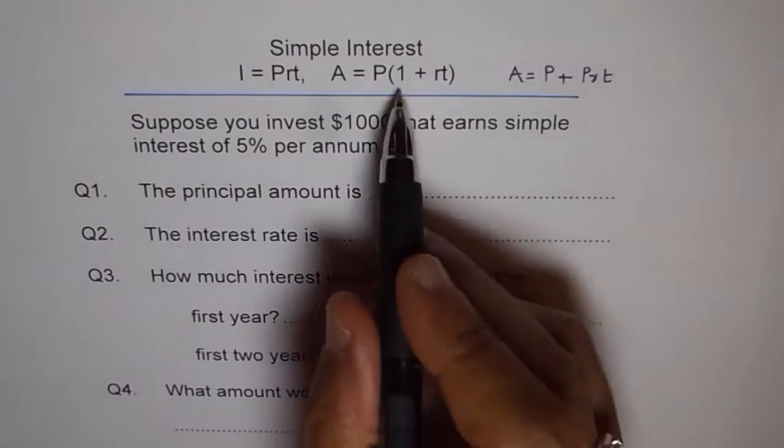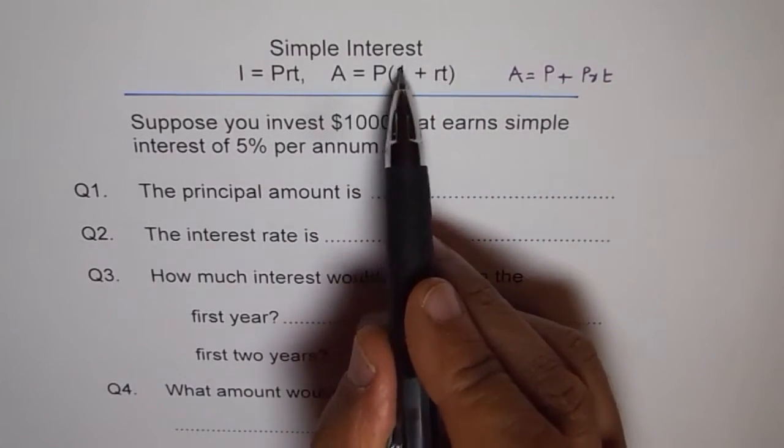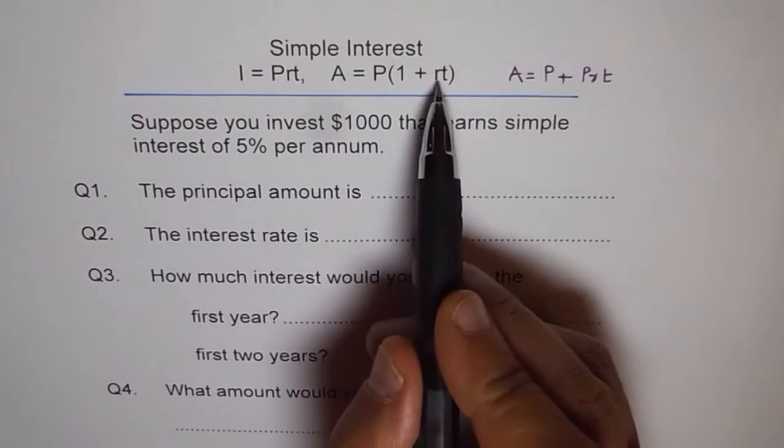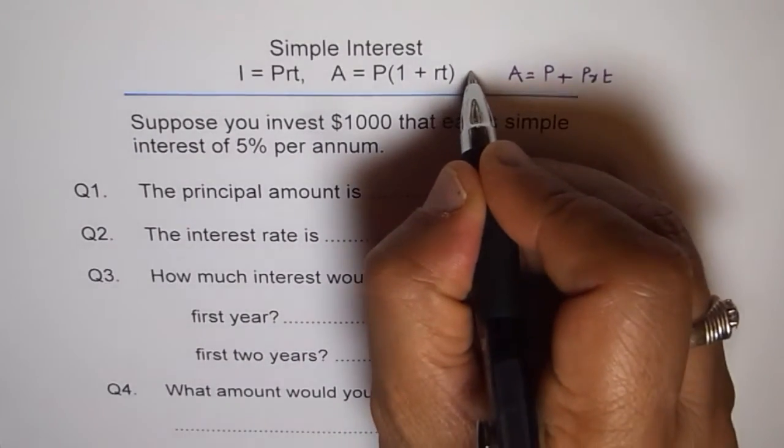But remember, these are both the same things. Here, distributive property: P times 1 is P and P times RT is PRT. So both are same things, they are like kind of the same thing. Now let us go through with our problems.